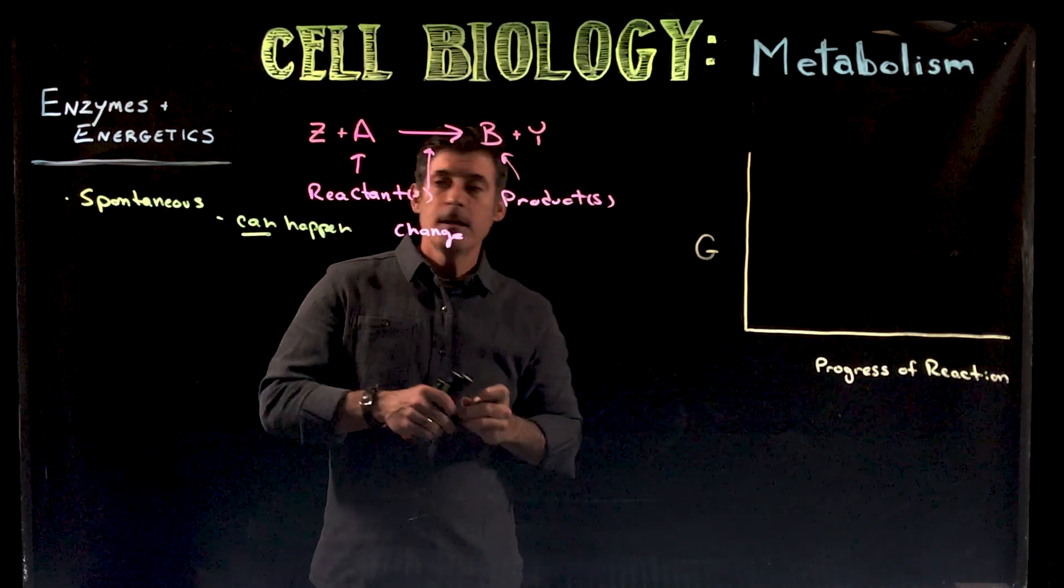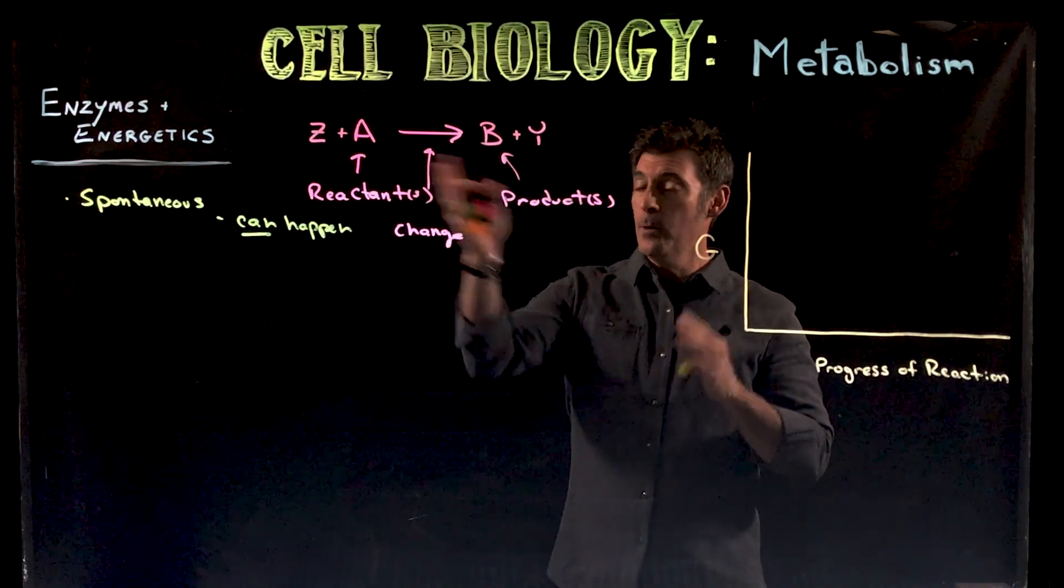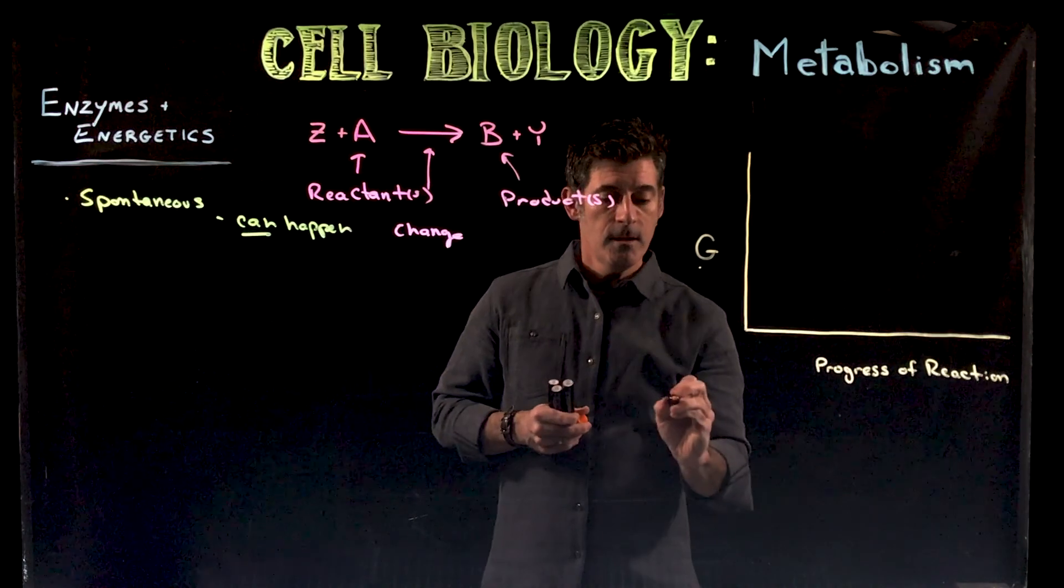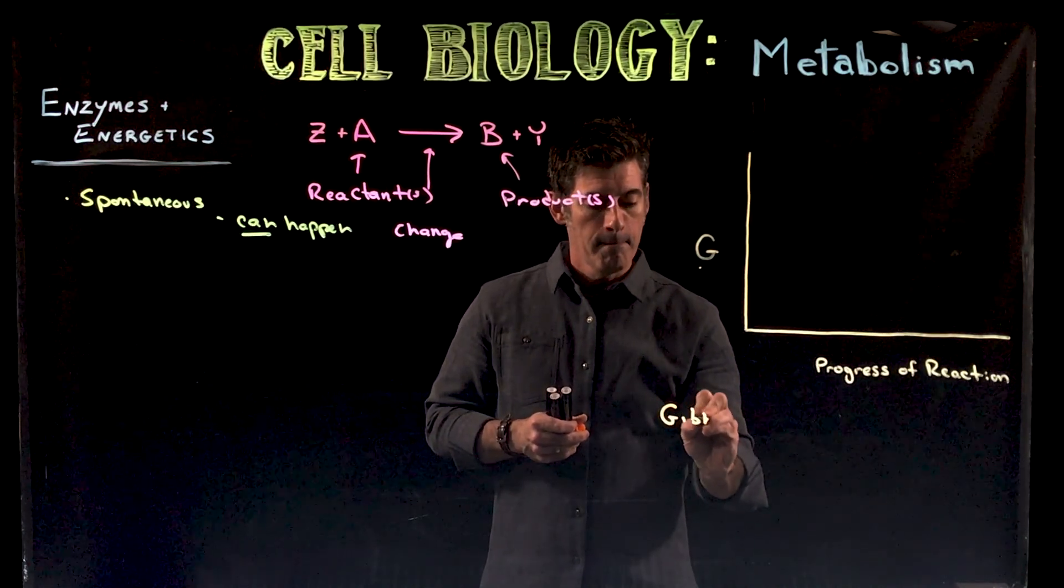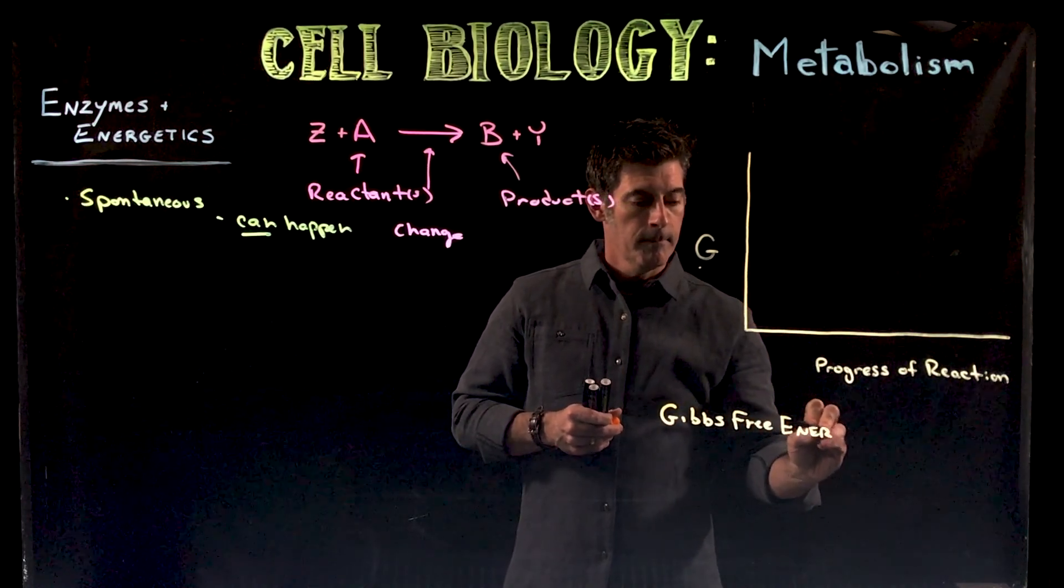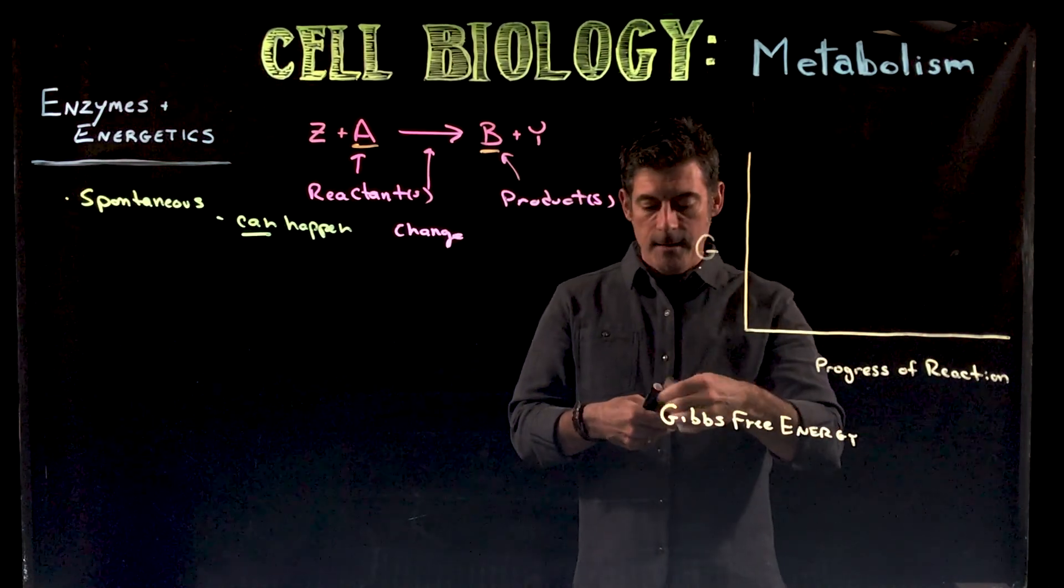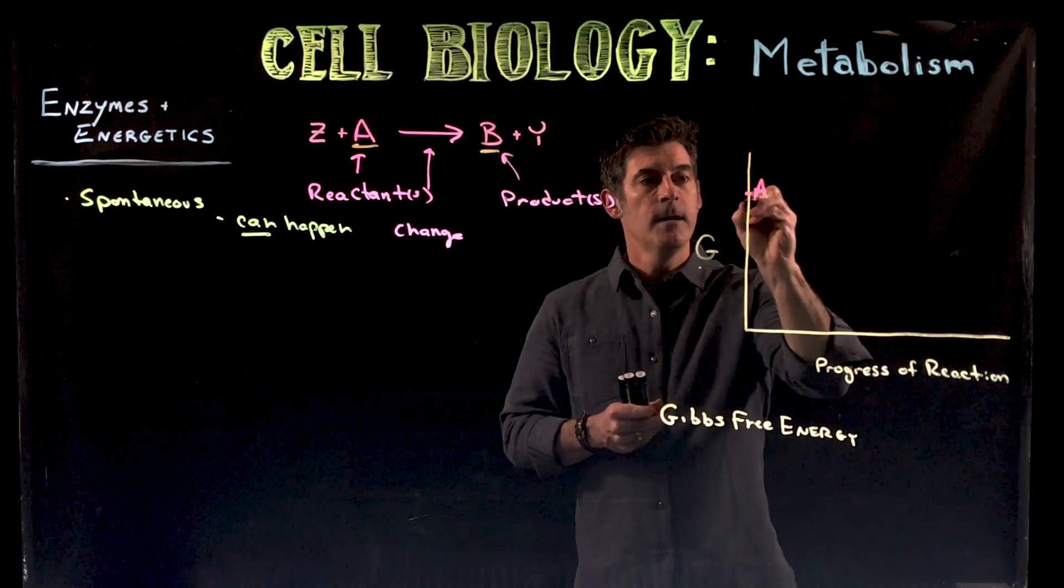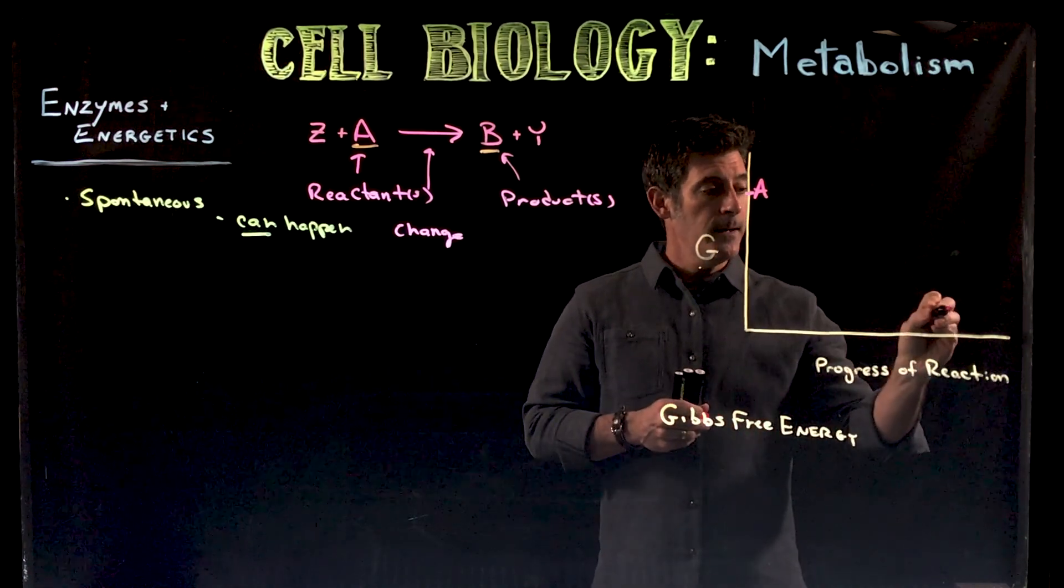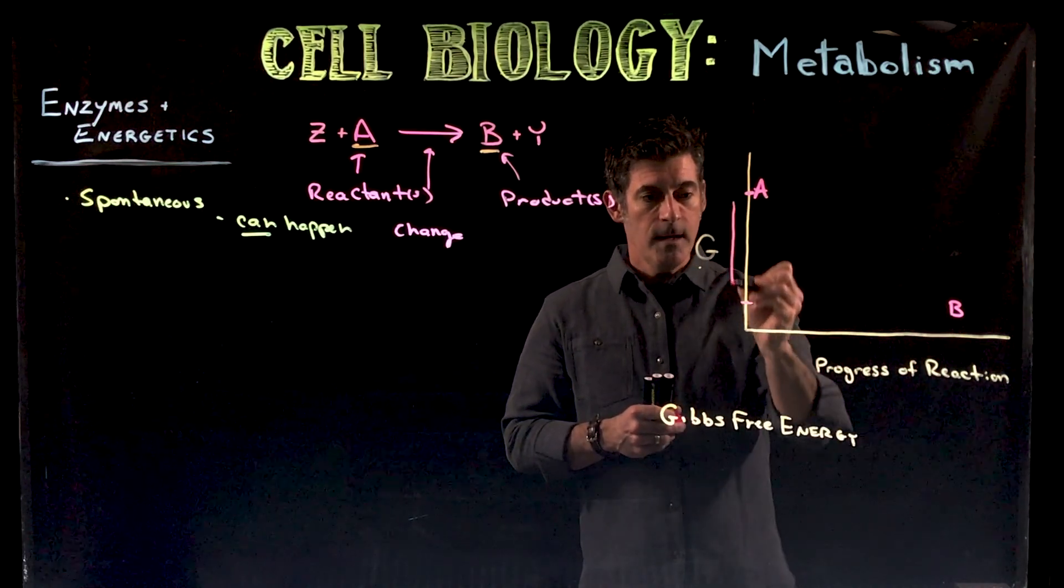The emphasis here is that they can happen, not that they necessarily will happen. Reactions that can happen have certain characteristics relating to energy. Here we have energy, this G represents what we call Gibbs free energy. Let's say we have the A molecule starting up here and here's its energy level on this Gibbs free energy axis.